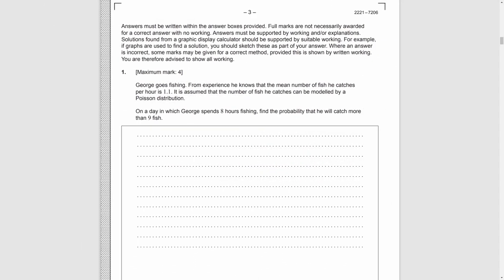Question 1. The mean number of fish is 1.1 per hour, and the number is modeled by a Poisson distribution. Spans 8 hours fishing, and we need to find the probability of the number more than 9. So we let X to be the total number of fish, and it will also follow a Poisson distribution with the mean 1.1 times 8, which is 8.8.